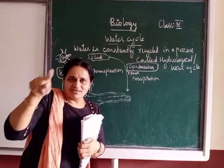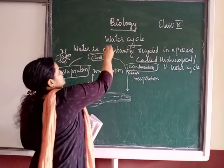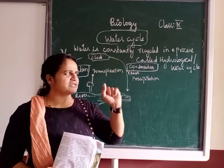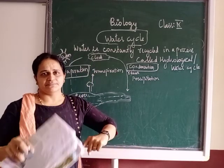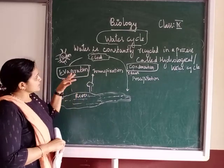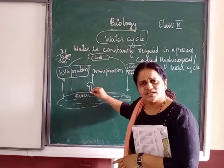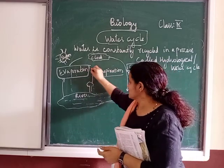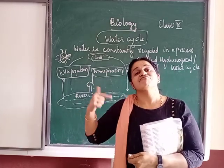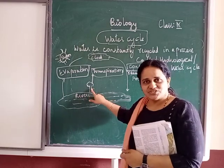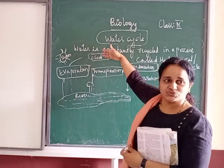This cyclic recycling of water is called the water cycle. This is not a one-day or two-day process — it is continuously taking place. There are also other sources, like trees, which give out water by the process of transpiration. Transpiration means loss of water in the form of vapors from the leaves. So transpiration is also a factor sending vapors into the environment.